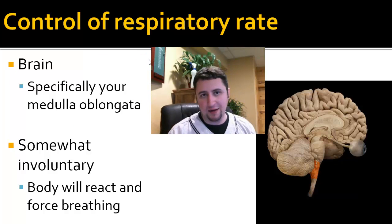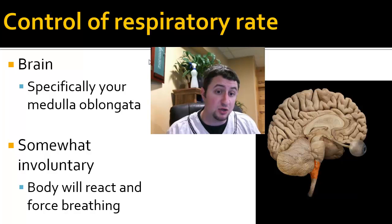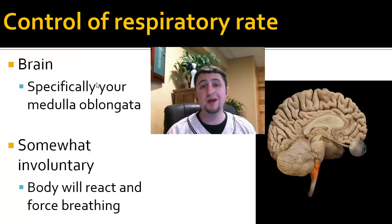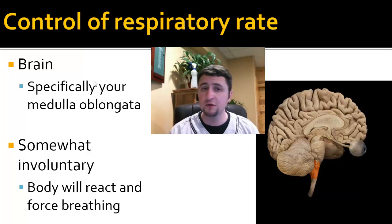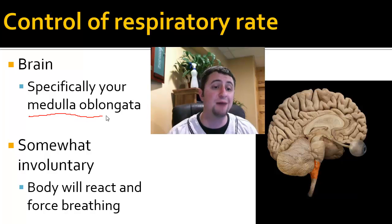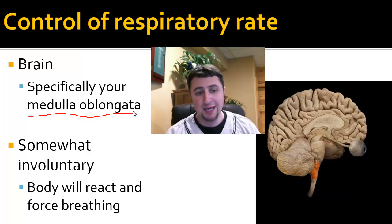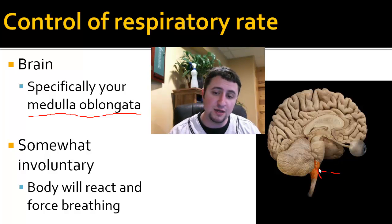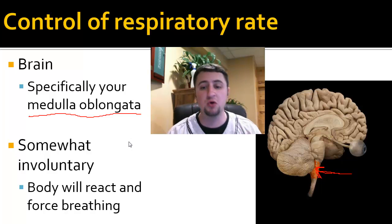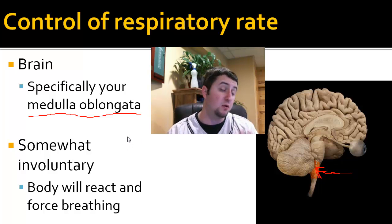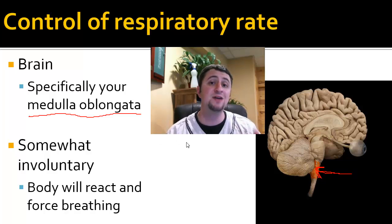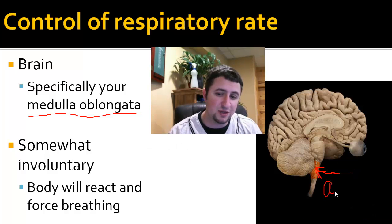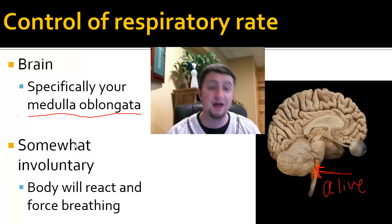The brain controls almost everything in our bodies — it controls our respiratory rate. More specifically, there's an area of our brain called the medulla oblongata. It's the lower part of our brain, called our brain stem. The medulla oblongata primarily controls our respiratory rate, or otherwise known as our breathing rate, and our heartbeat. It is ultimately what is keeping us alive at any moment.